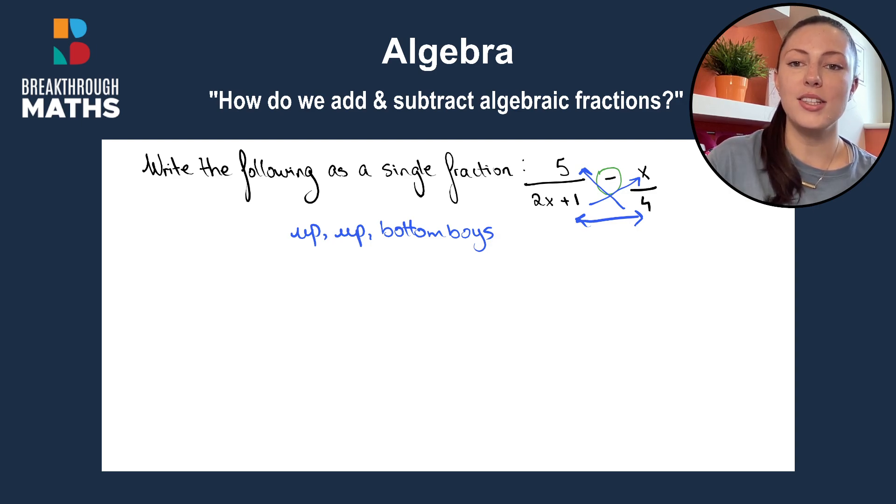And what you do then is you start with the first number in the first fraction, which is five. And then you follow the arrow along and you can see it's connected to four. So we multiply it by four. That's our first up arrow done. We move on to our second up arrow. We start with the next part of the next fraction. So we have x multiplied by what it's connected to, two x plus one. That's our second up arrow done.